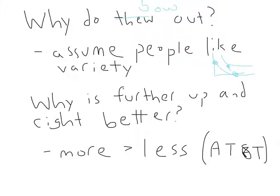The second is, why is the one that's further out better than the ones that are further in? So, as we move up and to the right, our utility increases. The idea is that more is better than less, and they attribute that great insight into human reasoning to those AT&T commercials where they have little kids say, more is better than less.